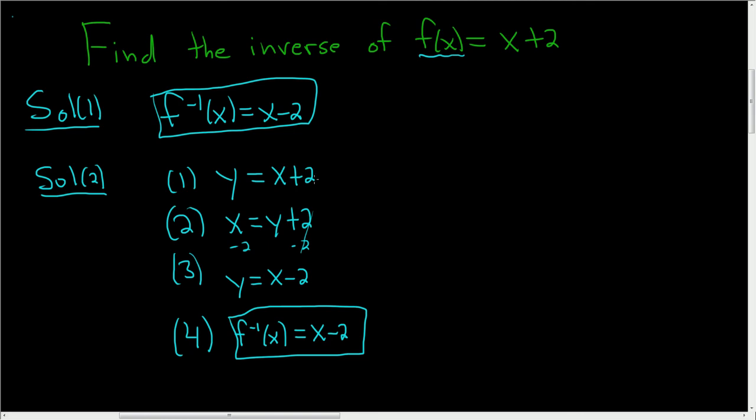So to recap, in the first step you just call it y. We did that. So we called this y. In the second step, you just switch x and y. And in the third step, you just solve for y. And the fourth step, just write down your answer. f inverse of x equals x minus 2.